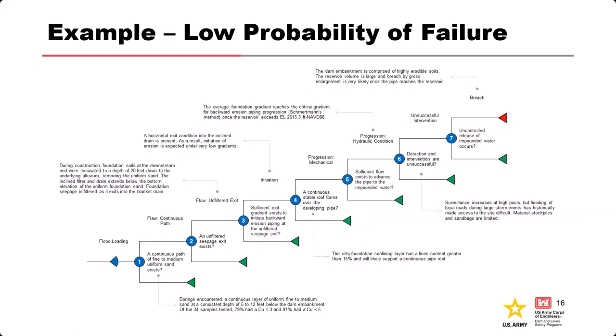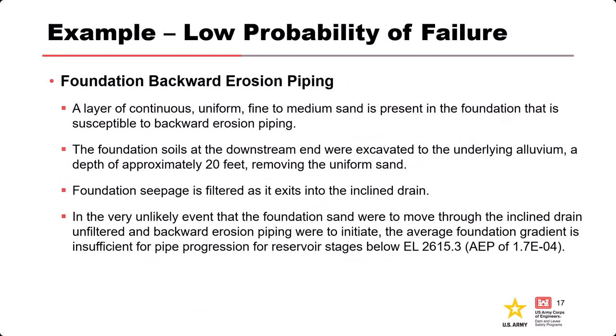The dam safety case is a further summary focusing on the key nodes and factors. For this example, we did have continuous uniform fine sand in the foundation, which is concerning. But the probability of failure was low because the foundation soils were excavated and replaced on the downstream side with a filter and drain. In the very unlikely event that seepage gets past the inclined drain, the foundation gradients aren't high enough at elevation 2615 — about a one-in-5,000 annual exceedance — so we need a very large event for sufficient gradient, and it would probably be filtered anyway.